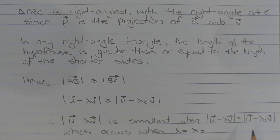Therefore, the length of u minus lambda v is smallest when the length of u minus lambda v is equal to the length of u minus lambda_0 v, which occurs when lambda is equal to lambda_0.